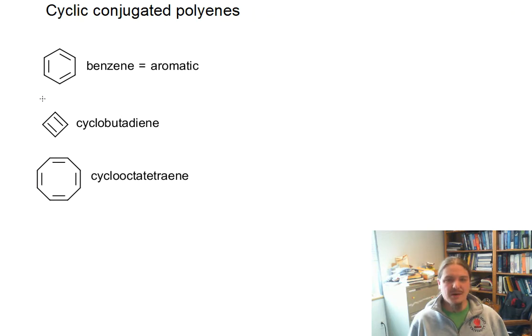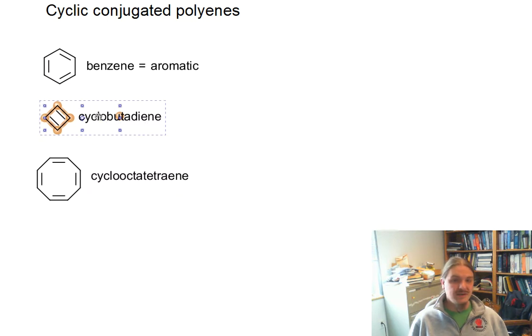In this video, I'm going to talk about cyclobutadiene and cyclooctetraene, which are cyclic conjugated polyenes - the next step down from benzene and the next step up from benzene. I'll talk a little bit about their properties, and we're going to find out they are not aromatic.